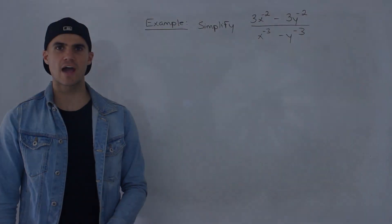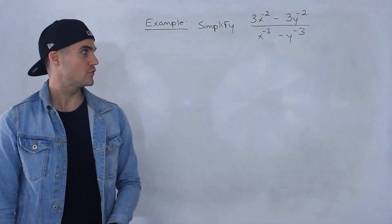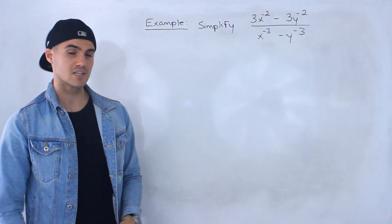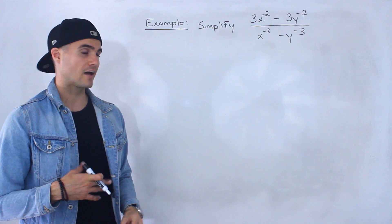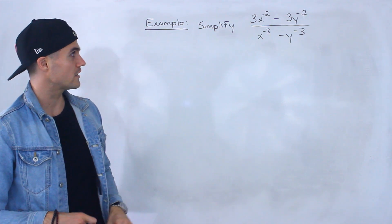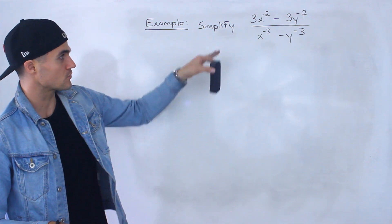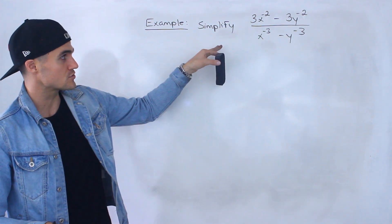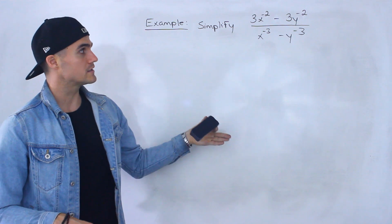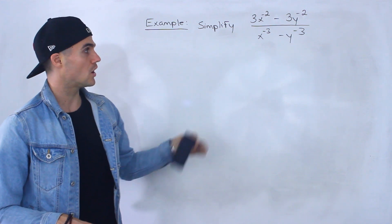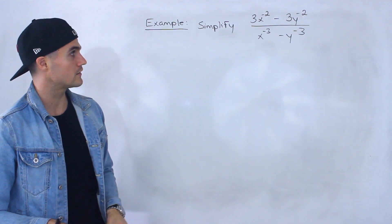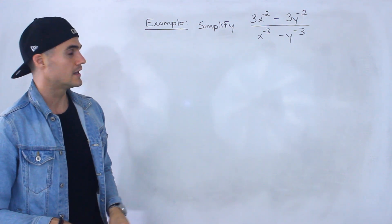What's up guys? Welcome back. Patrick here, and moving on to the next question. This one's going to have a lot of algebra as a heads up, so we've got to simplify this expression: 3x to the negative 2 minus 3y to the negative 2, all over x to the negative 3 minus y to the negative 3.